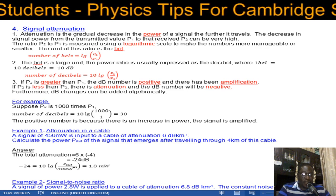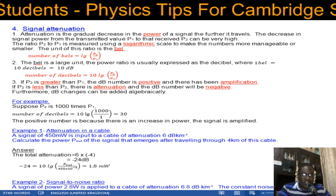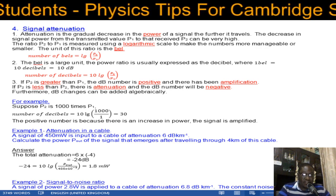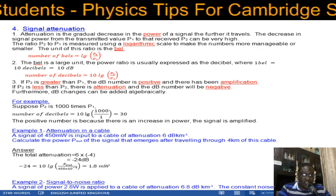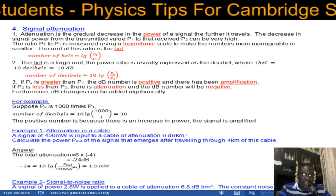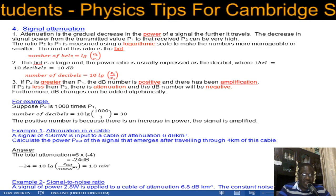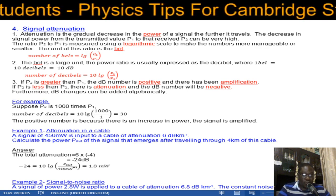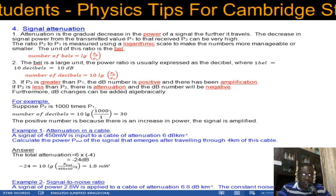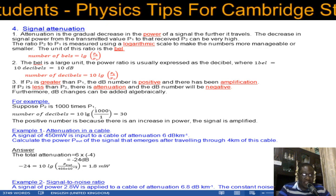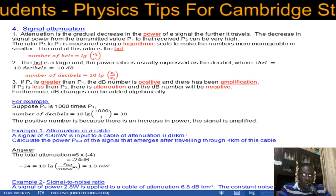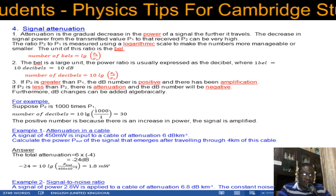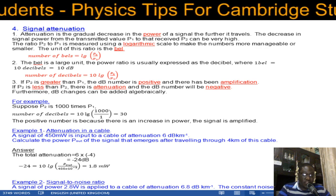Attenuation is the gradual decrease in the power of a signal the further it travels. The decrease in the signal power from the transmitted value P1 to that received P2 can be very high. The ratio P2 to P1 — that is output to input — is measured using a logarithmic scale to make the numbers more manageable. The unit of this ratio is the bel.